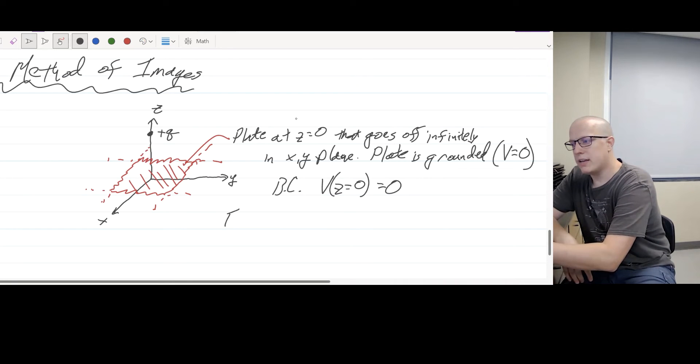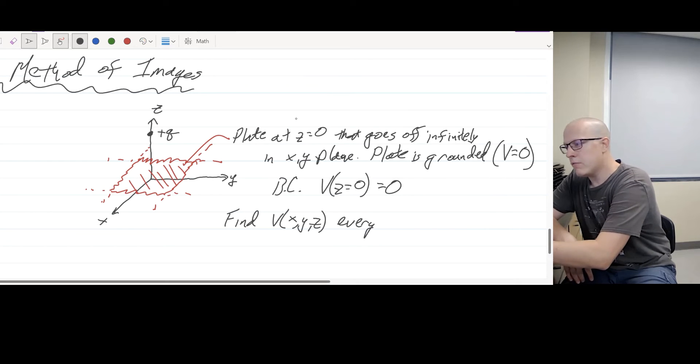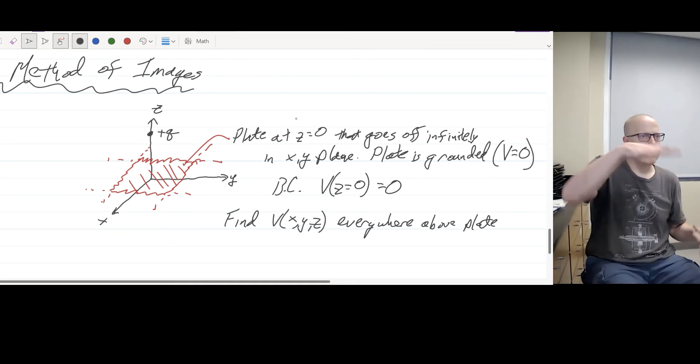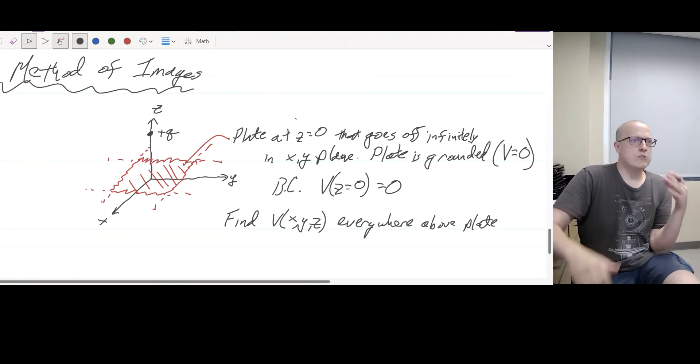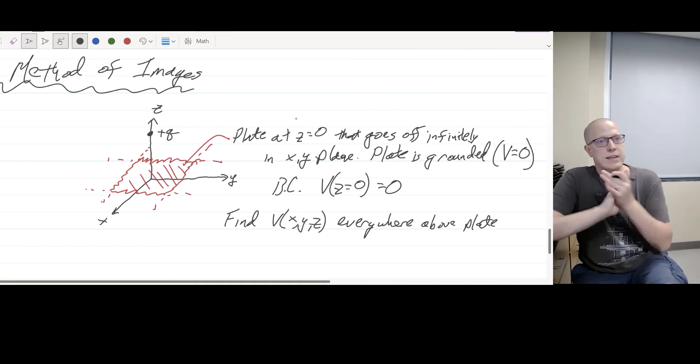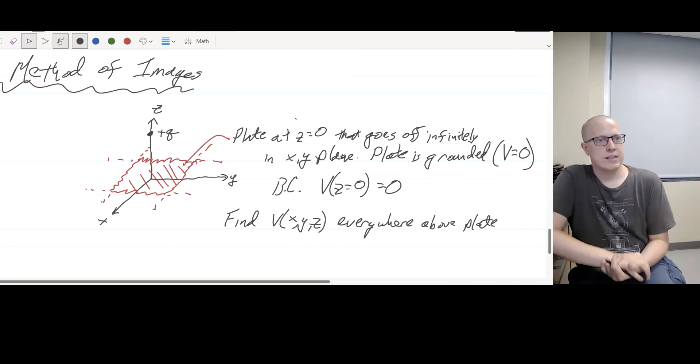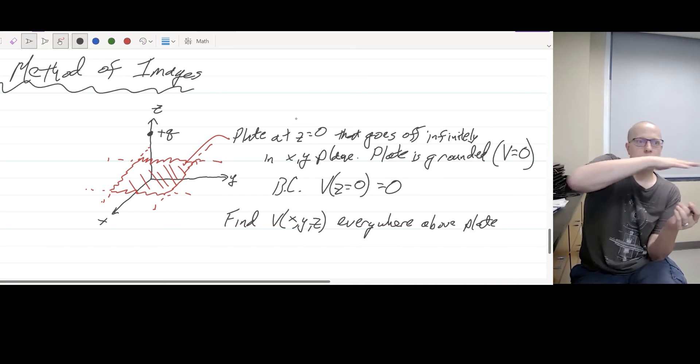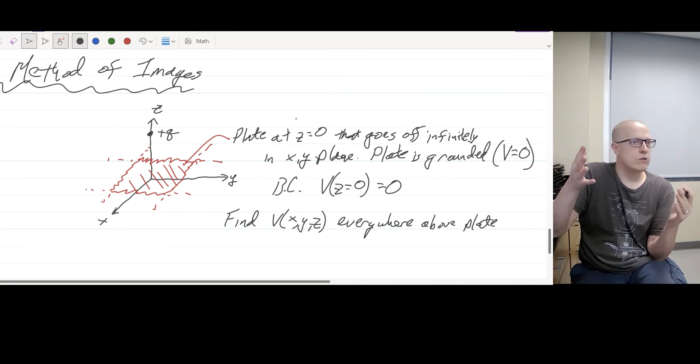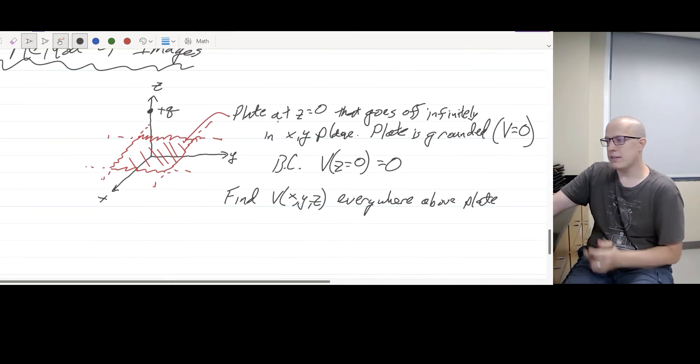And so now, what I would like to do is find V as a function of X, Y, and Z everywhere above the plate. So I don't care about what's happening underneath the plate. I only care about positive Z here. And so now I'm not just finding the potential due to a point charge. If that was the case, it would be KQ over R and we'd be done, right? We wouldn't have to do anything fancy there, but because the potential is forced to be zero at all of these points on the X, Y plane, I can't just use our normal direct integration to calculate this anymore.